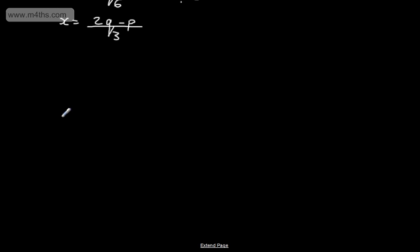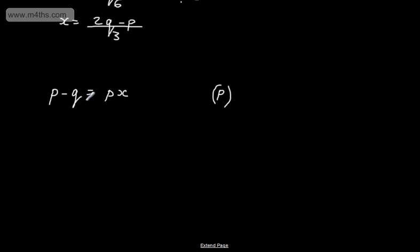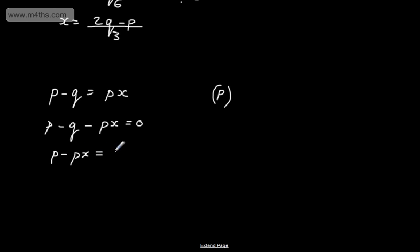Let's look at another one. Let's say we've got p - q = px, and we want to make p the subject. I'm going to collect the terms in p on the left-hand side, so I'm going to have p - q - px = 0. I'm now going to add q to both sides, so p - px = q.